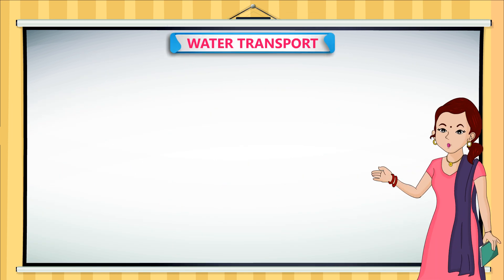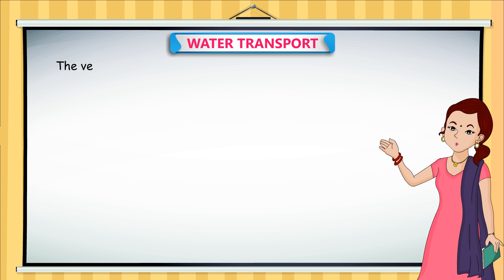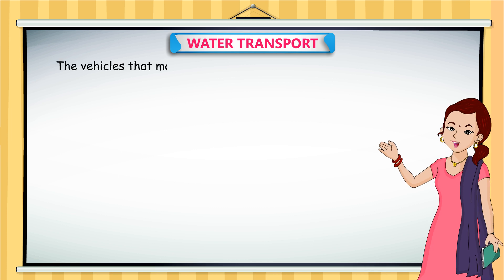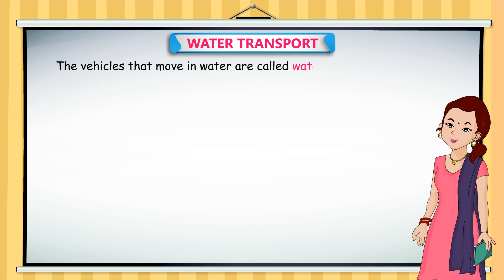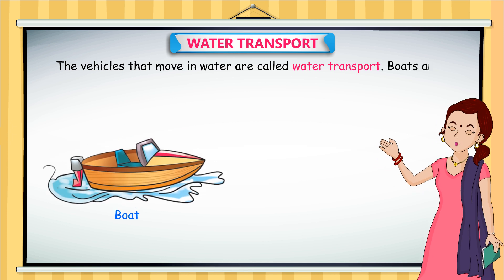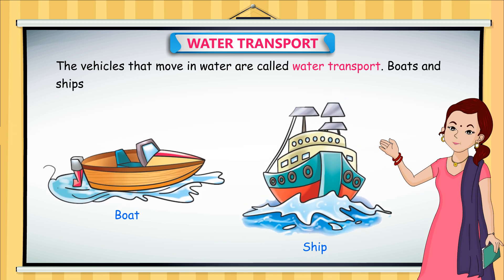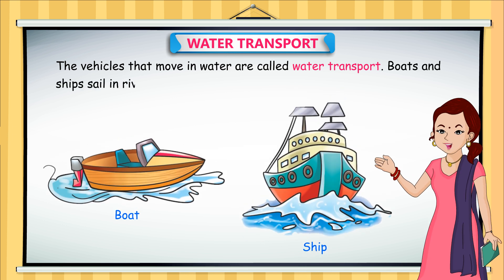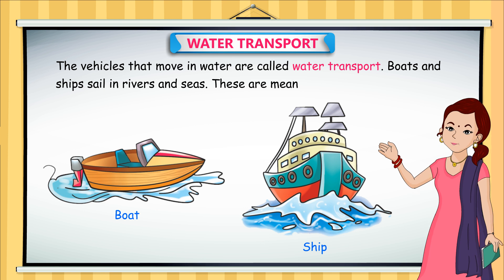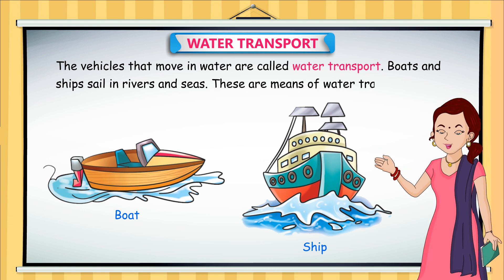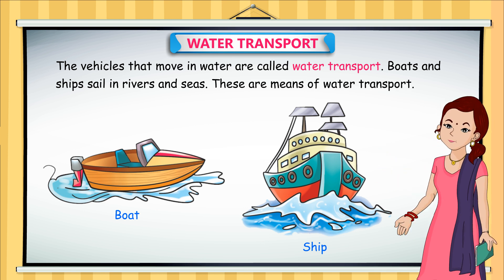Water Transport. The vehicles that move in water are called water transport. Boats and ships sail in rivers and seas. These are means of water transport.